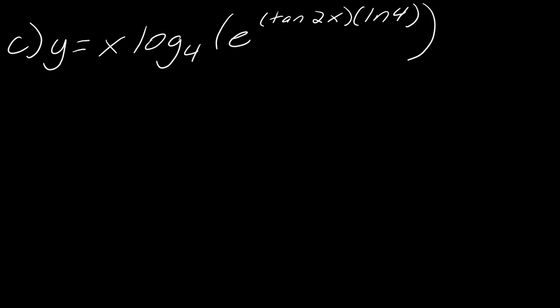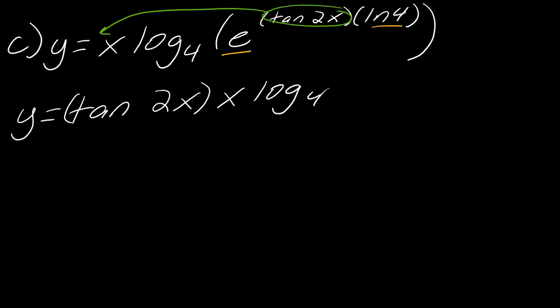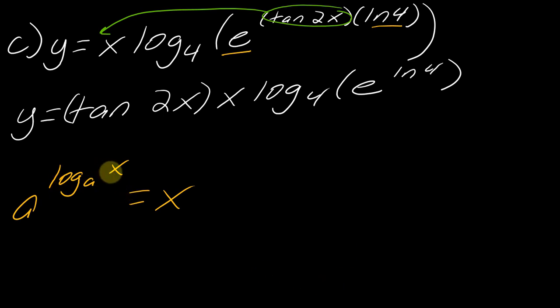This last one I really like because you have to really think about it. You might think to just throw all the different log properties at it, but there's something very interesting: you've got e and the natural log of 4. So what I want to do first is bring this out and think. So I've got tangent of 2x times x times the natural log of 4, and then e to the natural log of 4. Going back to that list of properties: a to the log base a of x equals x. A natural logarithm is just log base e of x, so e to the natural log of 4 is really e to the log base e of 4.